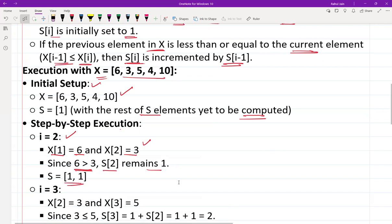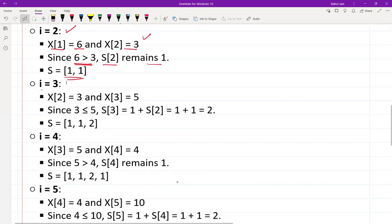Now if i equal to 3, then X[2] equal to 3 and X[3] equal to 5. Since 3 is less than 5, S[3] equal to 1 plus S[2] equal to 1 plus 1 equal to 2, so S becomes [1, 1, 2].